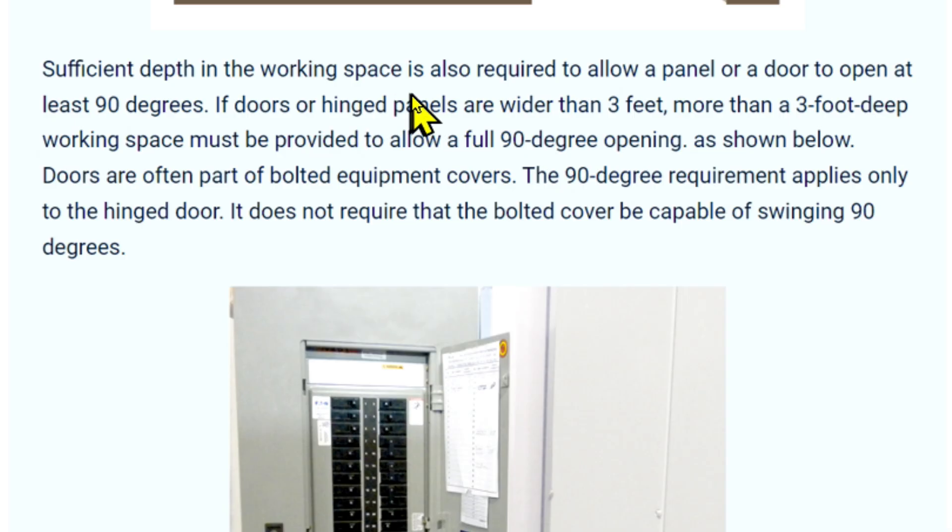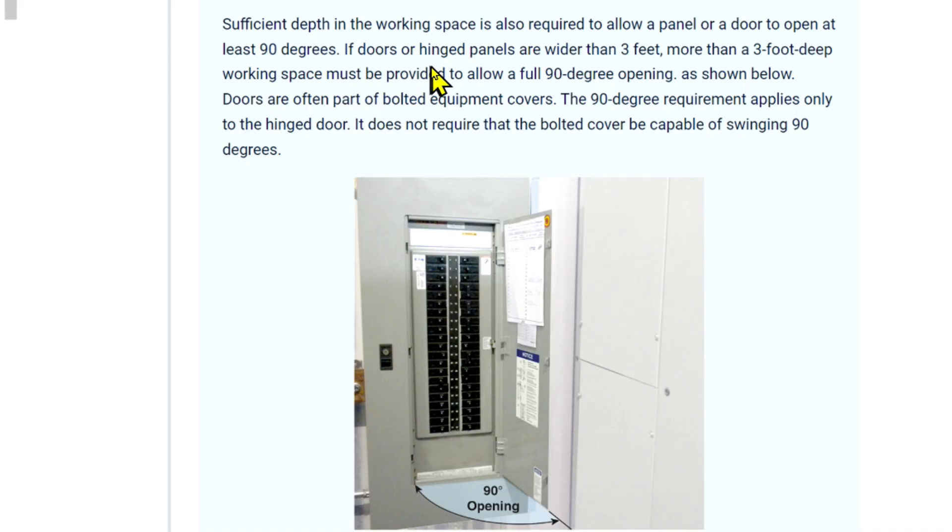Continuing in the 2023 NEC handbook, it says sufficient depth in the working space is also required to allow a panel or a door to open at least 90 degrees. If doors or hinged panels are wider than 3 feet, more than a 3 feet deep working space must be provided to allow a full 90 degree opening as shown below.